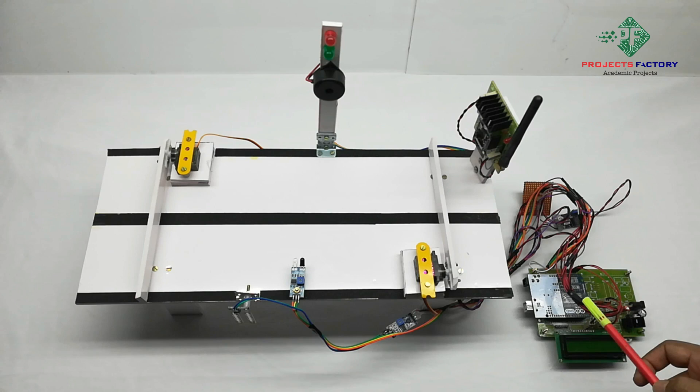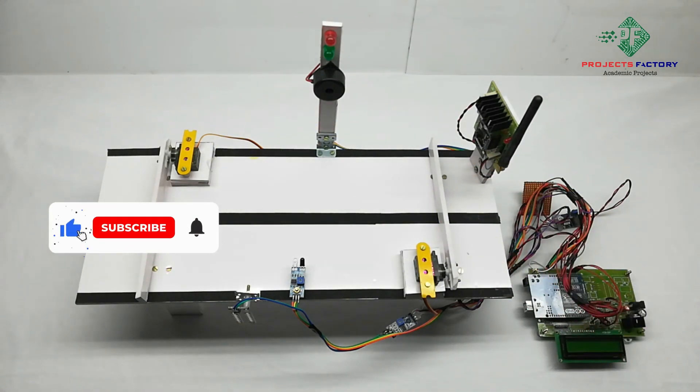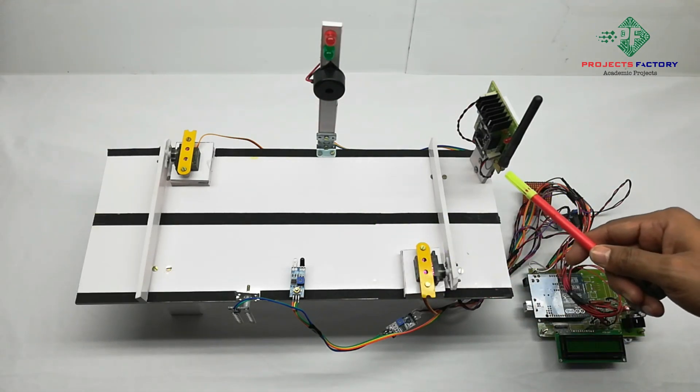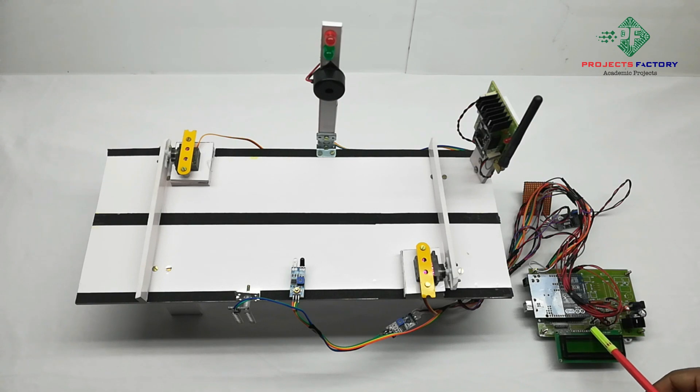These two servo motors control the two stop gates and are arranged to look like this. Here ESP32 cam is connected to Arduino. Using this system we can stop the vehicles on bridges when flood water flows over the bridges.